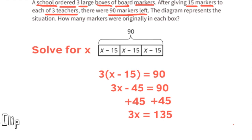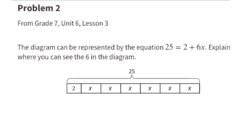Next, we need to change 3x to just 1x by dividing both sides by 3. 3x divided by 3 equals 1x, and 135 divided by 3 equals 45. There were 45 markers in each of the three boxes.